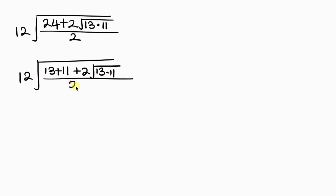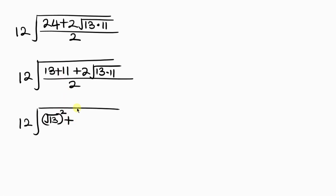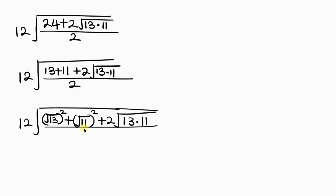So this becomes 12 times the square root of 13 plus 11, plus 2 times the square root of 13 times 11, all over 2. We write 13 as the square root of 13 squared, and 11 as the square root of 11 squared.